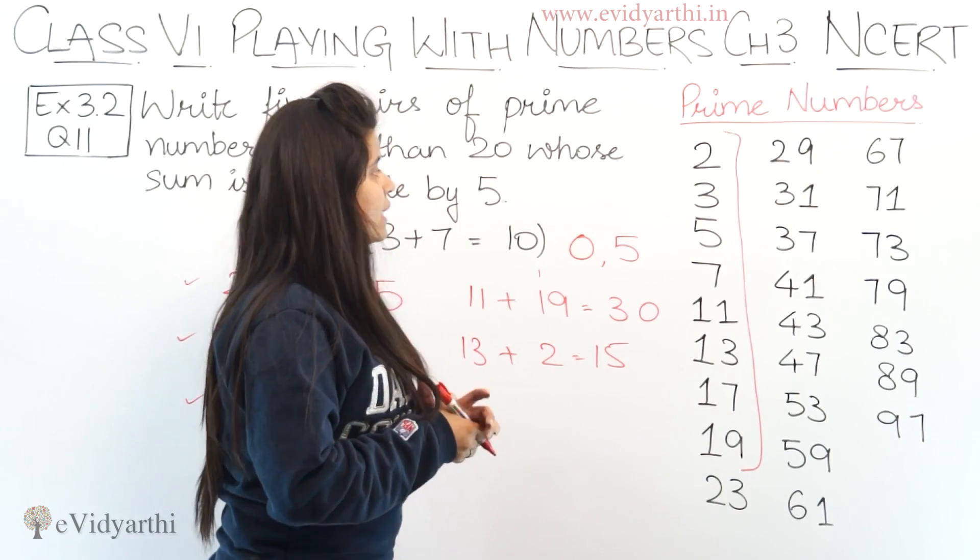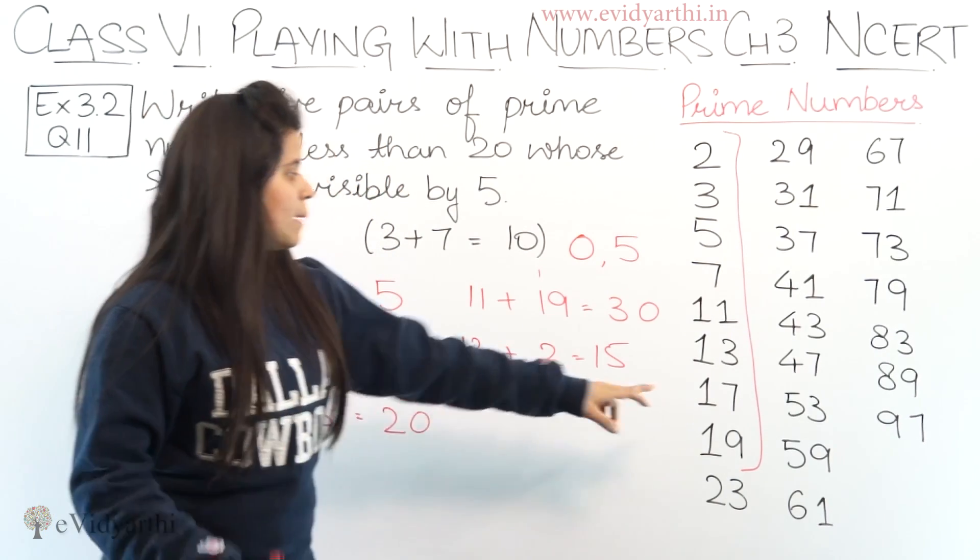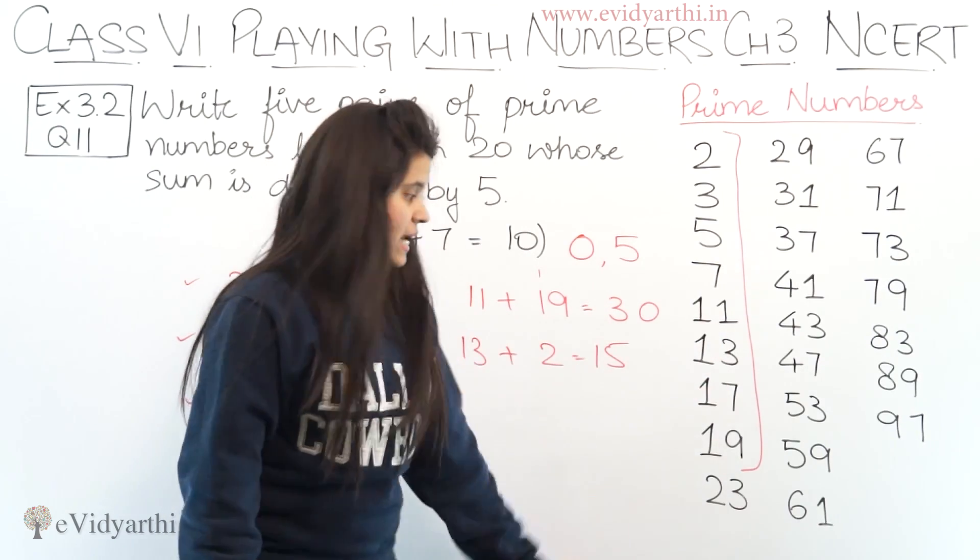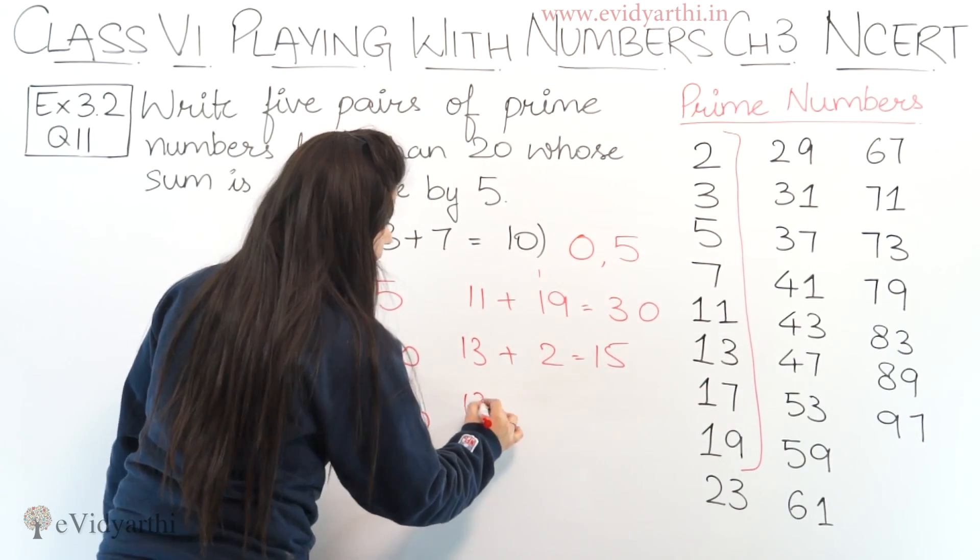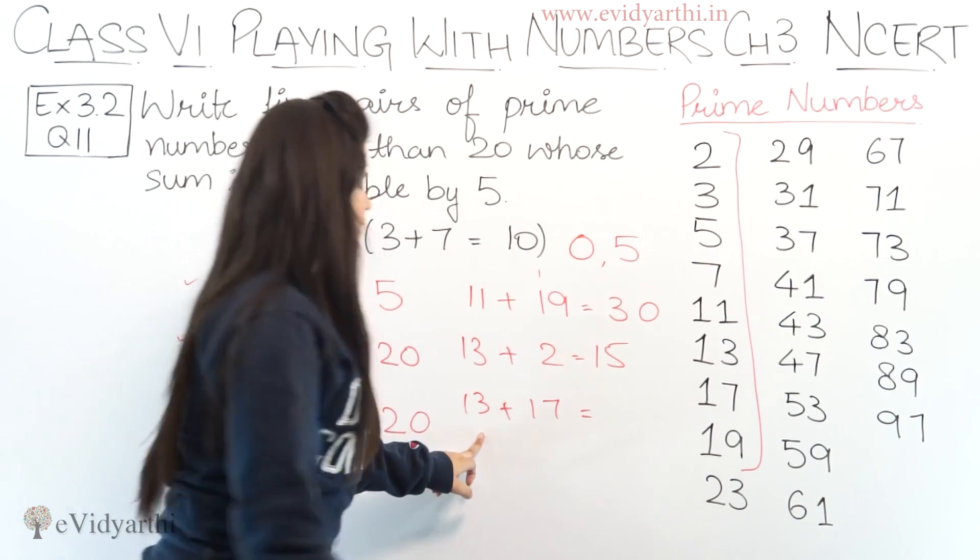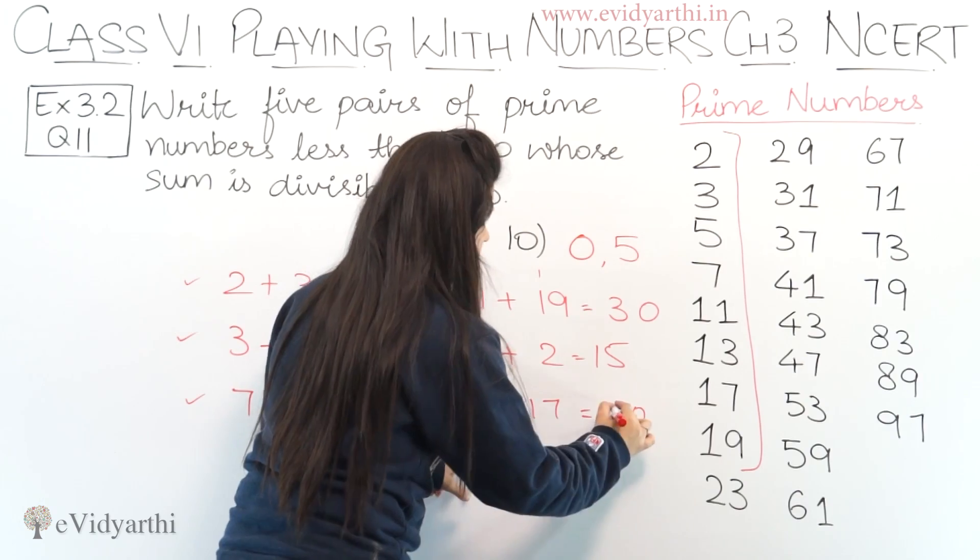Besides this, what else can we add with 13? There is another number: we can either add 13 and 17 so the last digit becomes 10. So another pair can be 13 plus 17. So 7 plus 3 will be 10 and this will be 13... wait, 30.